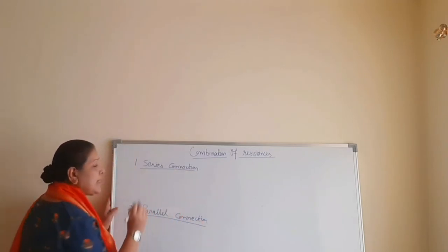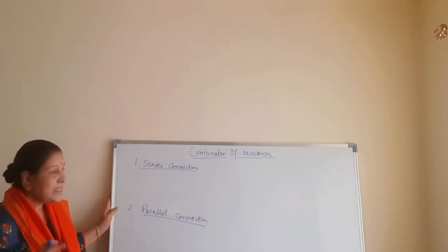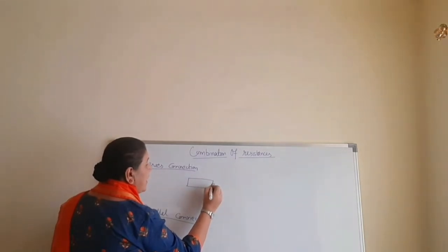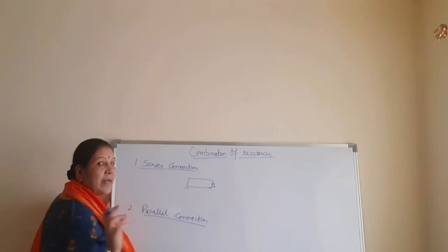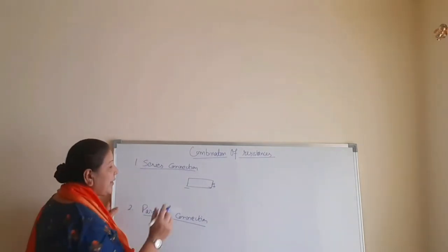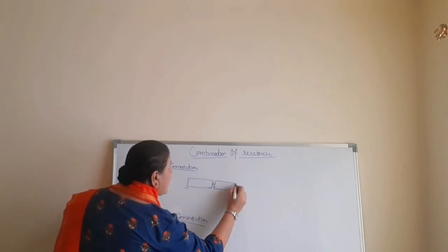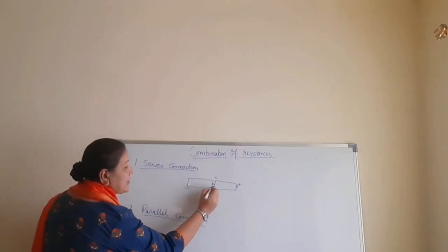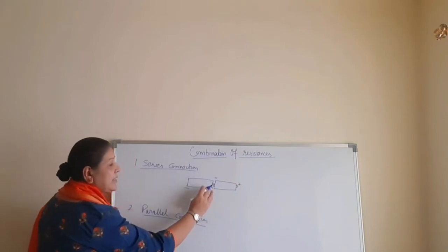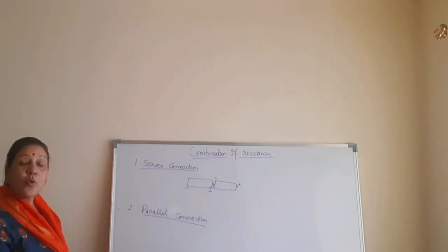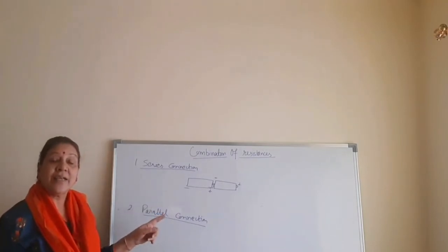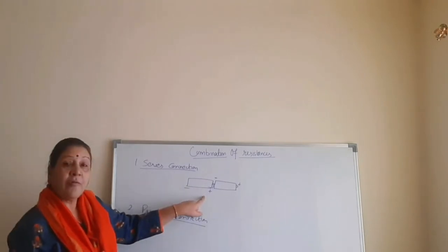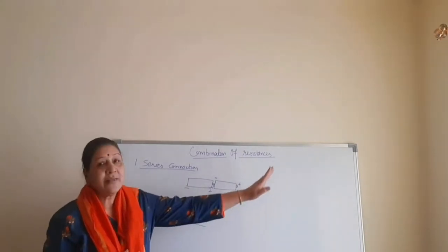So what happens in series connection — we are going to discuss that. Say we have two cells here. We know that the metallic cap is the positive terminal and the zinc container is the negative terminal of the cell. If I place one more cell such that the positive of one terminal is connected to the negative of the other conductor and so on — this type of connection is called series connection, arranged in linear order where different terminals are connected.